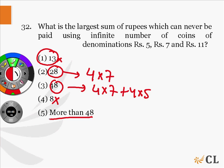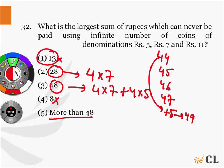Now let us make 44, 45, 46, and 47 using these 3 coins. If we can make 44, we will add 5 to it and we will make 49. And hence we can make all the numbers greater than 49 by just adding 5 to the subsequent numbers.